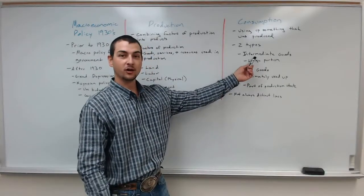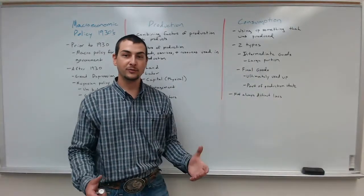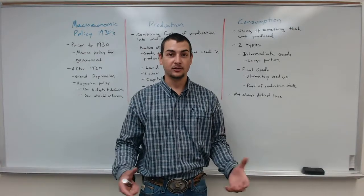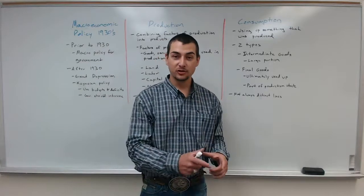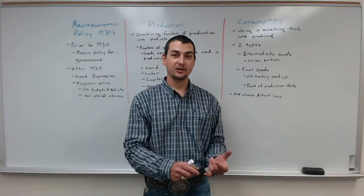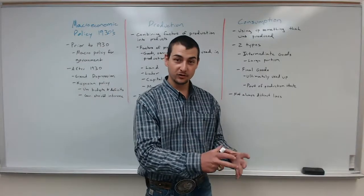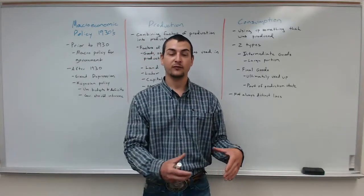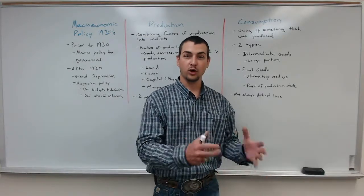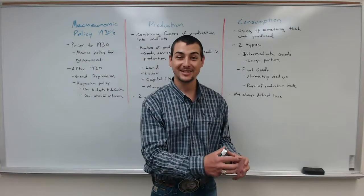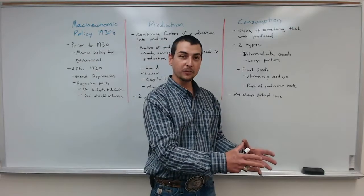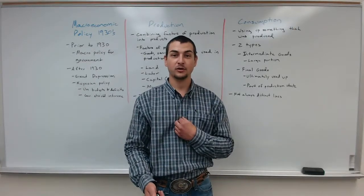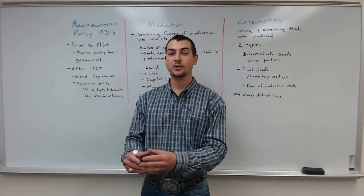An intermediate good is a good that goes into producing the final good — like the ingredients for the final product. For a loaf of bread, the intermediate goods are the yeast, flour, water, and eggs that go into making it. For a car, all of the metal, oil, rubber for the tires, and glass for the windows are intermediate goods — ingredients that build the final good. Similarly, the cotton and buttons that go on a shirt are all intermediate goods because they're used in the production of another good.